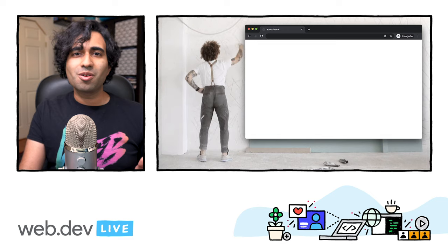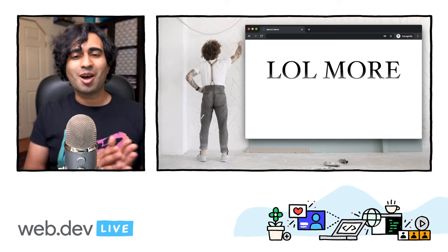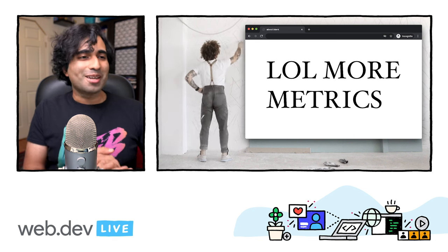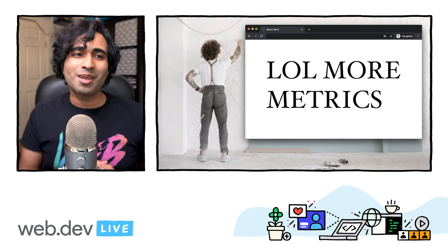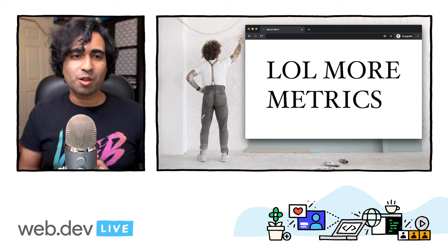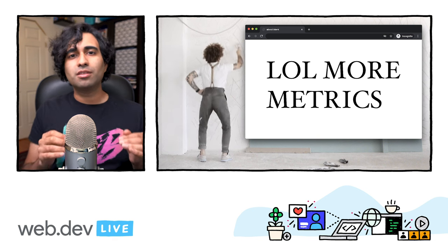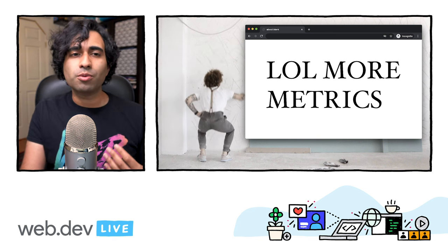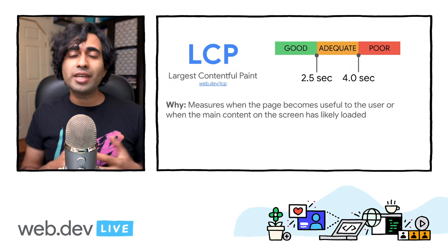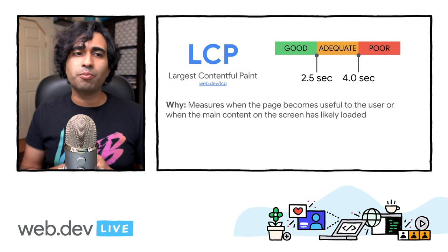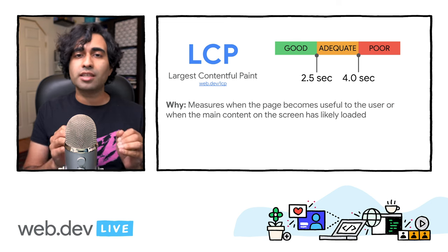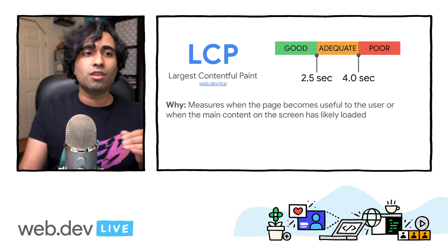Now we have more metrics to talk about. Historically it's been a challenge for web developers to measure how quickly the main content of a web page loads and is visible to users. Thankfully, we now have Largest Contentful Paint, which reports the render time of the largest content element visible within the viewport.